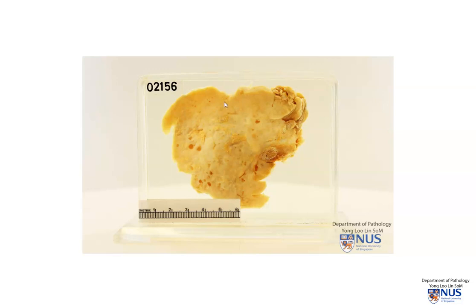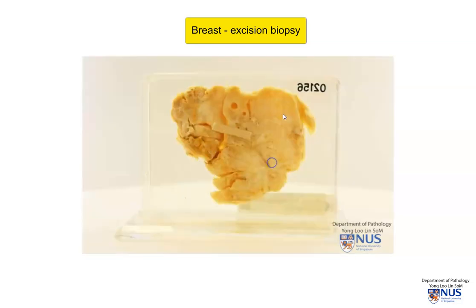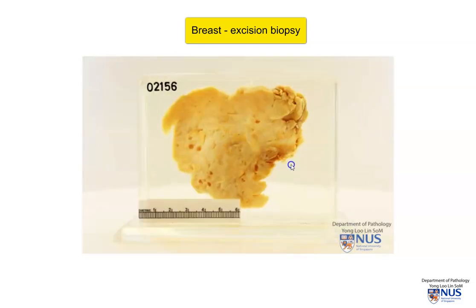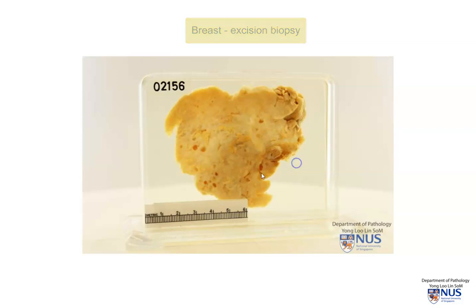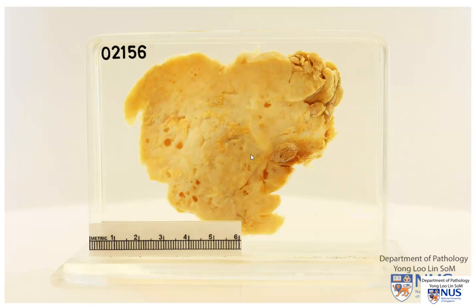Hello, this is a gross pathology specimen taken from a breast. What we're looking at is the cut surface, and we can actually recognize some fatty tissue here and here, which are the yellowish areas.